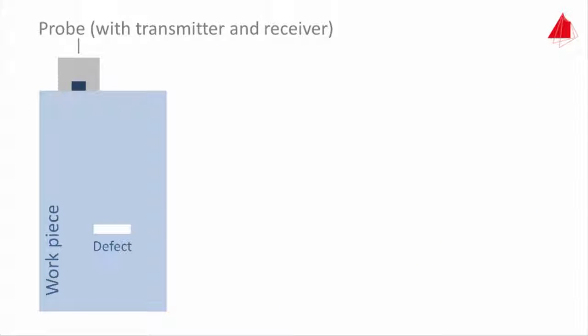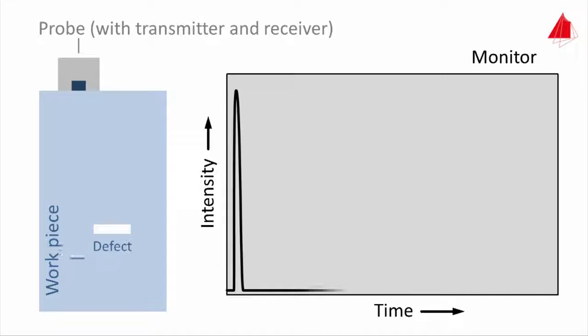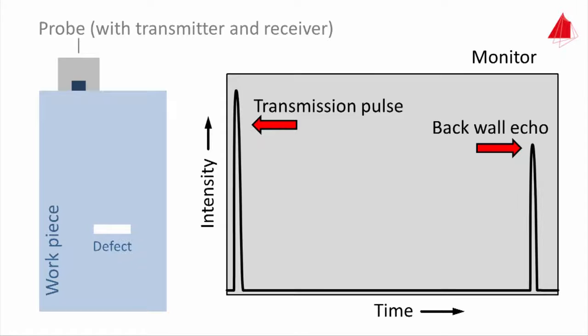In pulse echo mode, a transducer installed in a probe performs both the sending and receiving of the ultrasonic pulse. On a computer monitor, the intensity is being plotted upwards on the y-axis and the time towards the right on the x-axis. With a probe at a place free from defects, only two signals may be seen: the transmission pulse and the echo resulting from the lower surface, termed backwall echo.